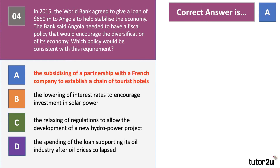The right answer is A. Tourism is often a long-term development strategy to help diversify — Angola is heavily dependent on oil for its exports, so using fiscal policy, a government subsidy to partner with a French hotel chain would represent diversification. Option B would be monetary policy, C is regulatory policy rather than fiscal policy, and D is not diversification.